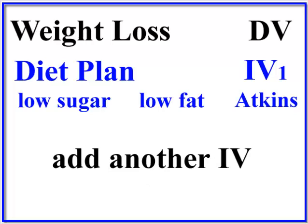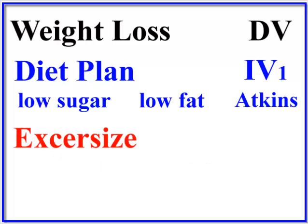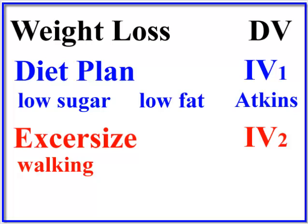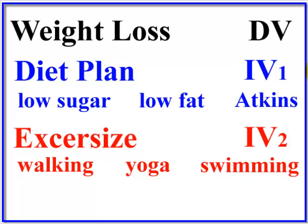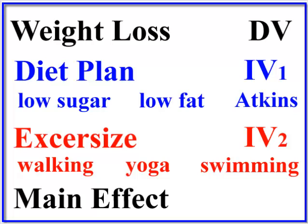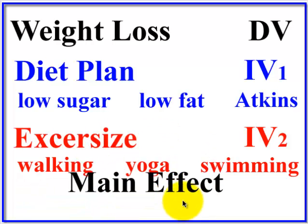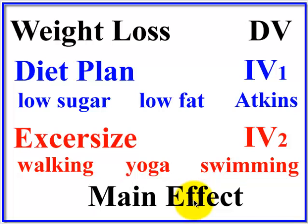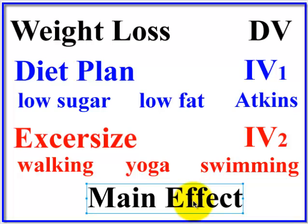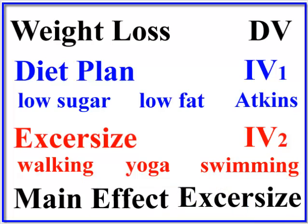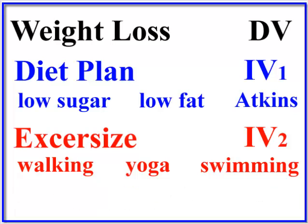We're going to add another IV — let's call it exercise, IV2. This also has three separate groups: the first level is walking, the second is yoga, and the third is swimming. So we have IV1 with three levels and IV2 with three levels. The main effect of exercise is whether there is a significant difference between the exercise groups. There are two possible main effects here — every IV has its own effect, so with two IVs there are two possible main effects: the main effect of exercise and the main effect of diet plan.